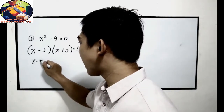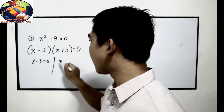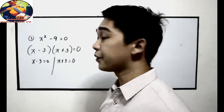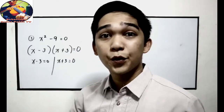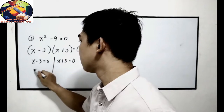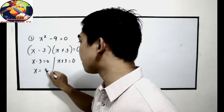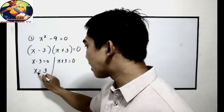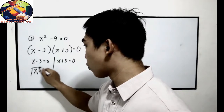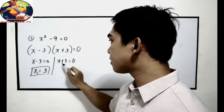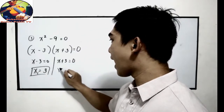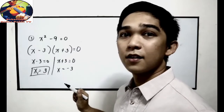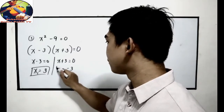x minus 3 equals 0, and x plus 3 equals 0. Transpose: x equals positive 3, which we name x sub 1, and x equals negative 3, which we name x sub 2.